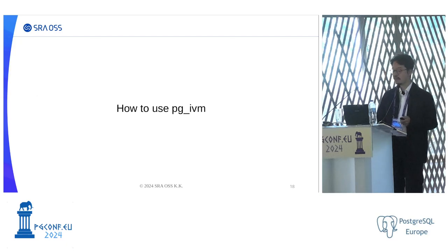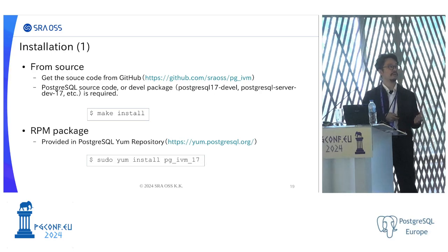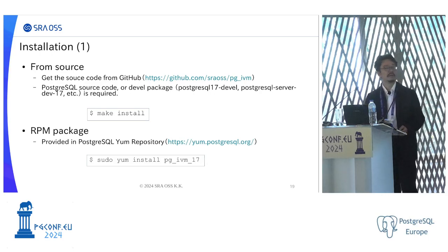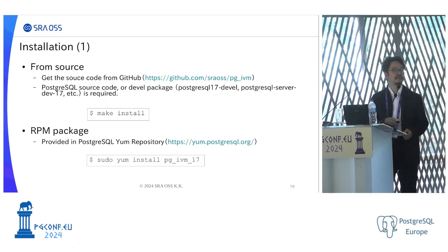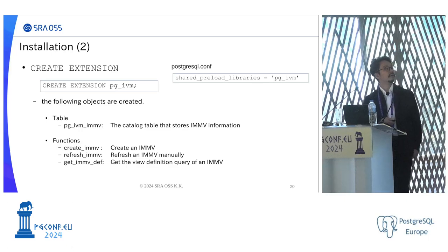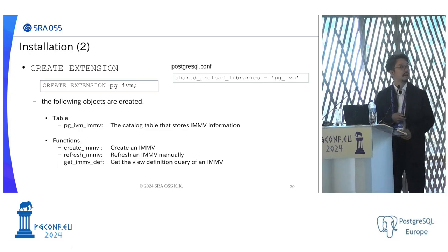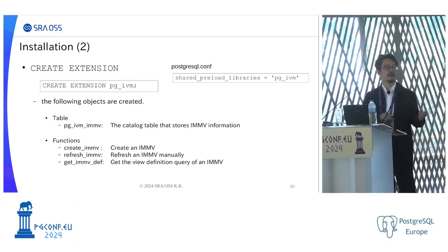I'll explain how to use PGIVM. To install it, you can install from source or from an RPM package. Source files can be downloaded from GitHub, and you also need the PostgreSQL source code or the development package, then just run make install. The RPM package can be obtained from the PostgreSQL YUM repository servers. To enable PGIVM, execute CREATE EXTENSION, and also setting the shared_preload_libraries is necessary because PGIVM has some hook functions. When CREATE EXTENSION is executed, all the necessary objects are created.